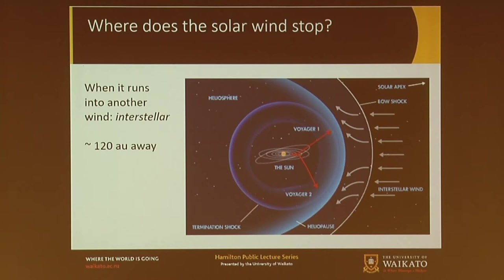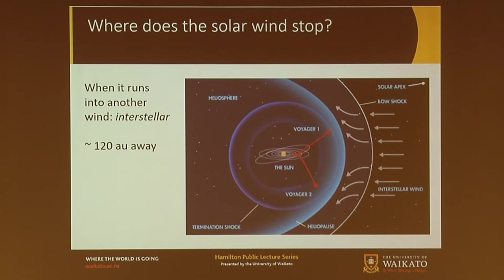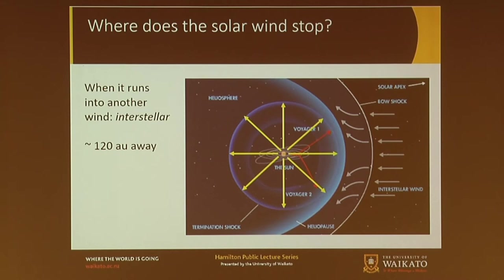That happens a long way away. The usual unit we use in space is the astronomical unit — AU — the distance from Earth to the sun. This boundary, the edge of the heliosphere, is about 120 of those units away. There's also another important boundary closer in — the solar wind streams out radially, and as those rays spread apart, the mass gets thinner and thinner while the speed stays about the same, around 700 kilometres a second throughout.